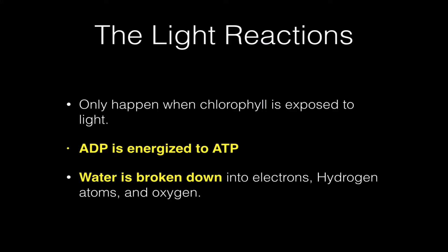Now the light reactions are called the light reactions because they only happen when chlorophyll is exposed to light. So light has to be shining on the chlorophyll for the light reactions to happen, and the light reactions do two things. They energize ADP into a different chemical called ATP, and it also breaks water molecules down into electrons, hydrogen atoms, and oxygen.